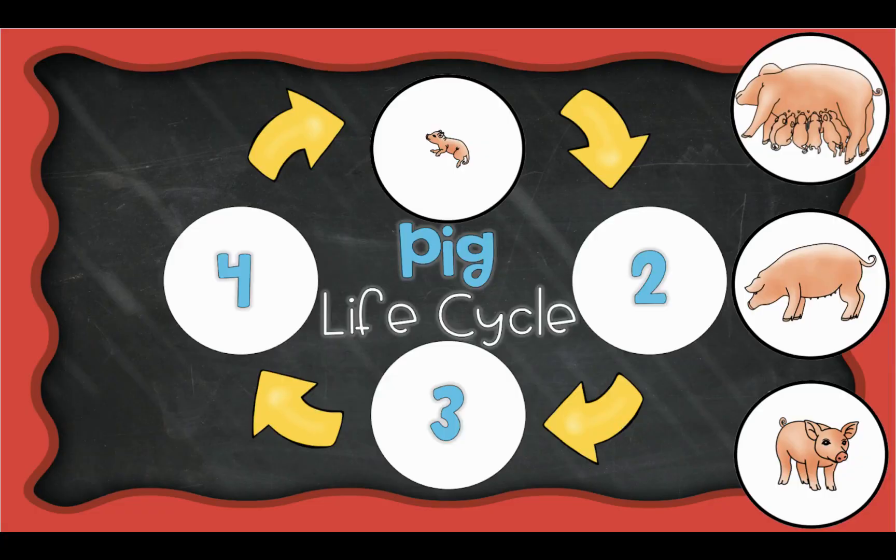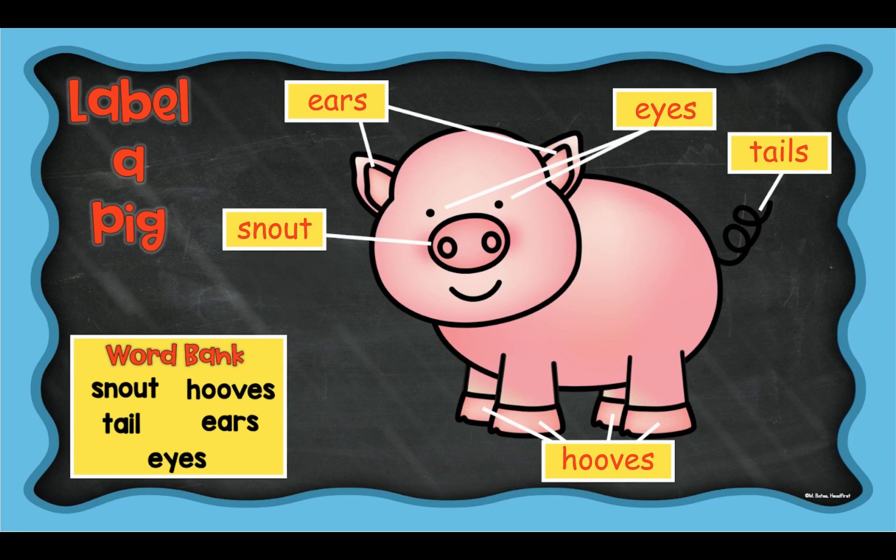There are some other activities that go with the nonfiction. This is a drag and drop where they're going to put the pig life cycle in order. This one is where they're going to use the word bank to type in the yellow boxes to label the parts of the pig.